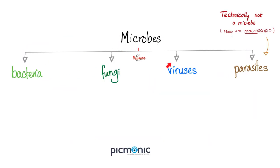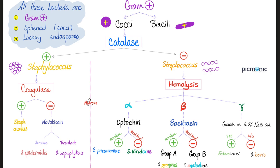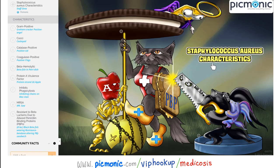Now to today's video. Microbes include bacteria, fungi, viruses, and parasites. Bacteria are divided into gram-positive and gram-negative based on the Gram stain. Staph aureus is a gram-positive coccus that is catalase-positive and coagulase-positive. All the bacteria in this slide are gram-positive spherical cocci lacking endospores.